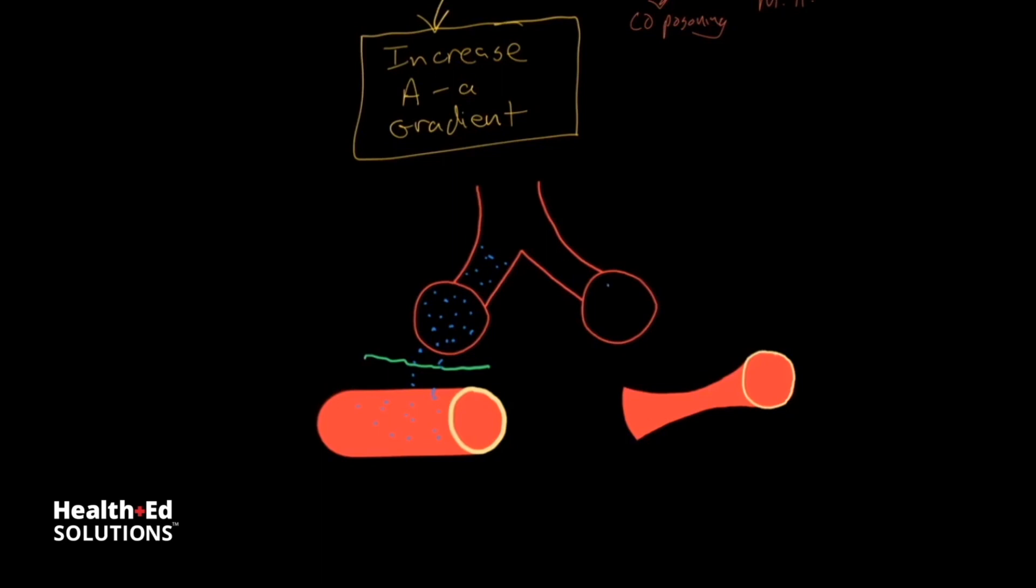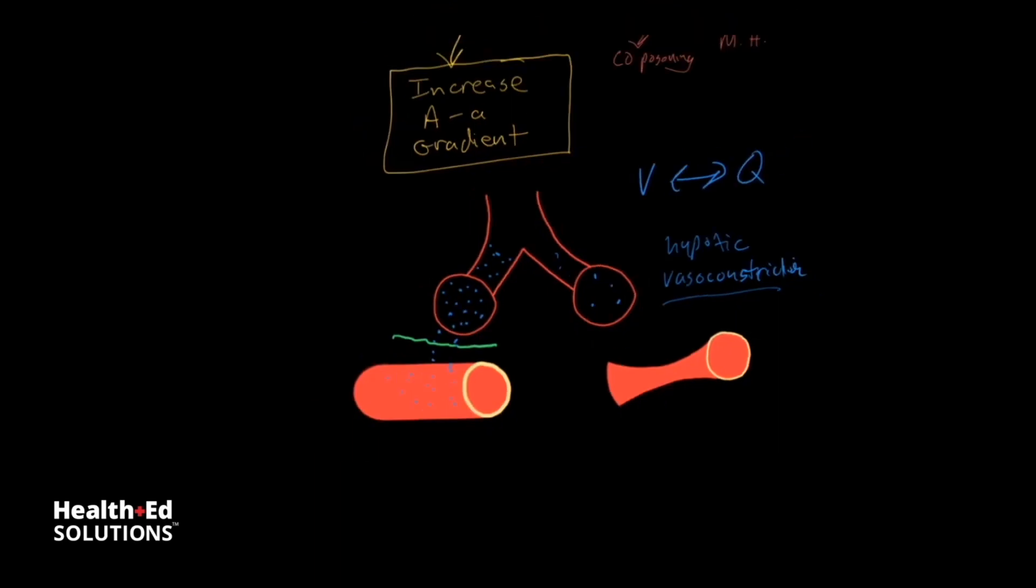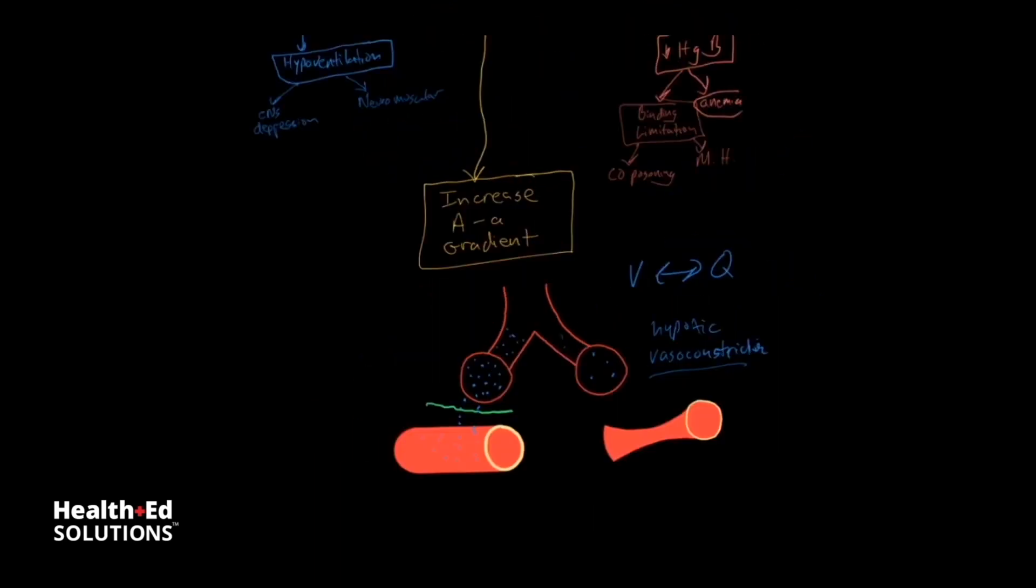Now, imagine if you have an alveoli with just a little bit of oxygen. Through a process called pulmonary vasoconstriction, the arterioles sort of squeeze down, so there's very little blood flow if there's not a lot of oxygen. So this is called hypoxic vasoconstriction. And this is what allows us to maintain a balance between ventilation and perfusion.